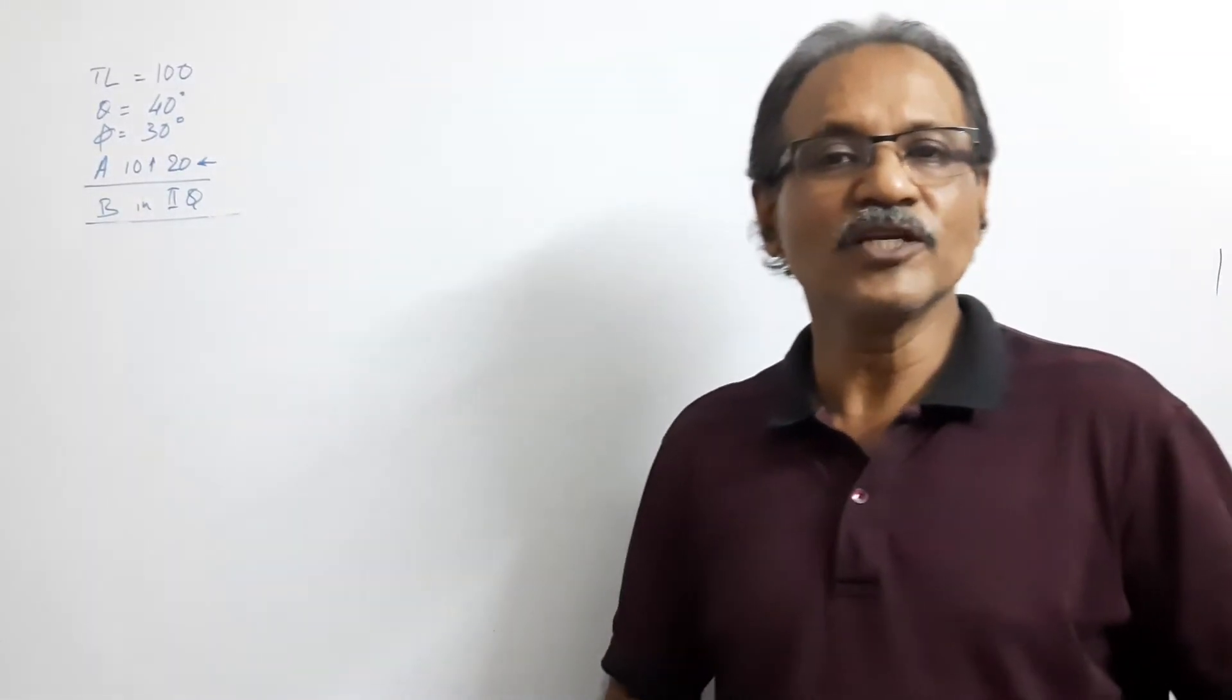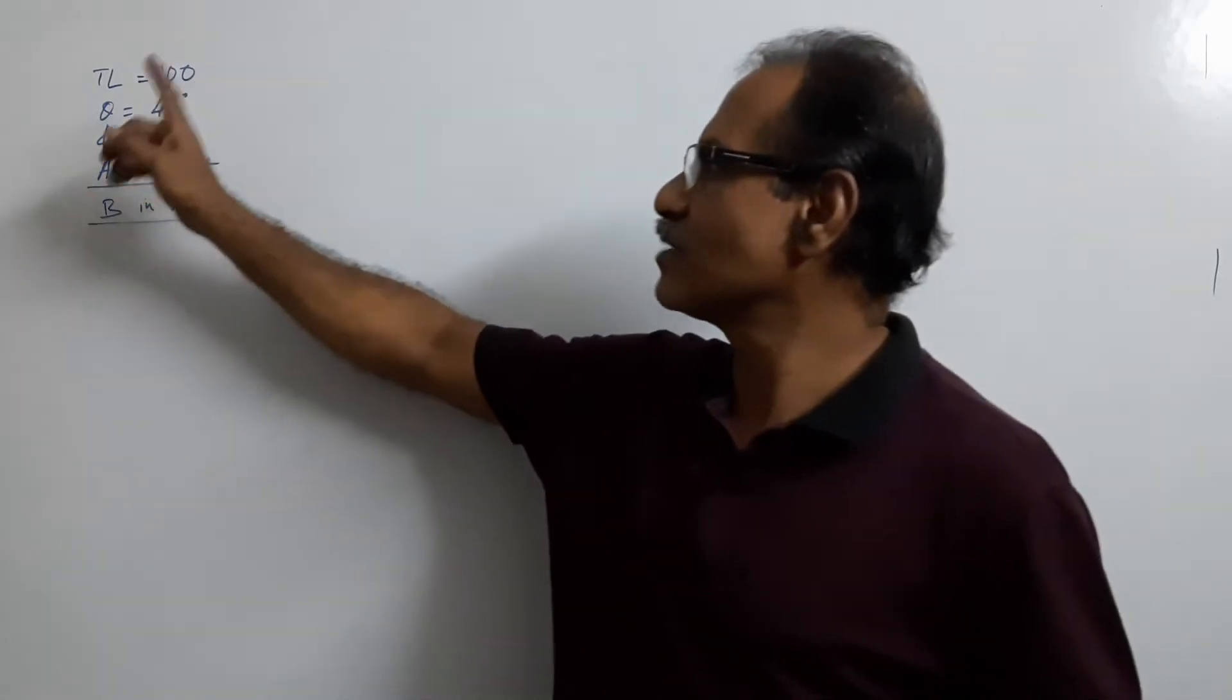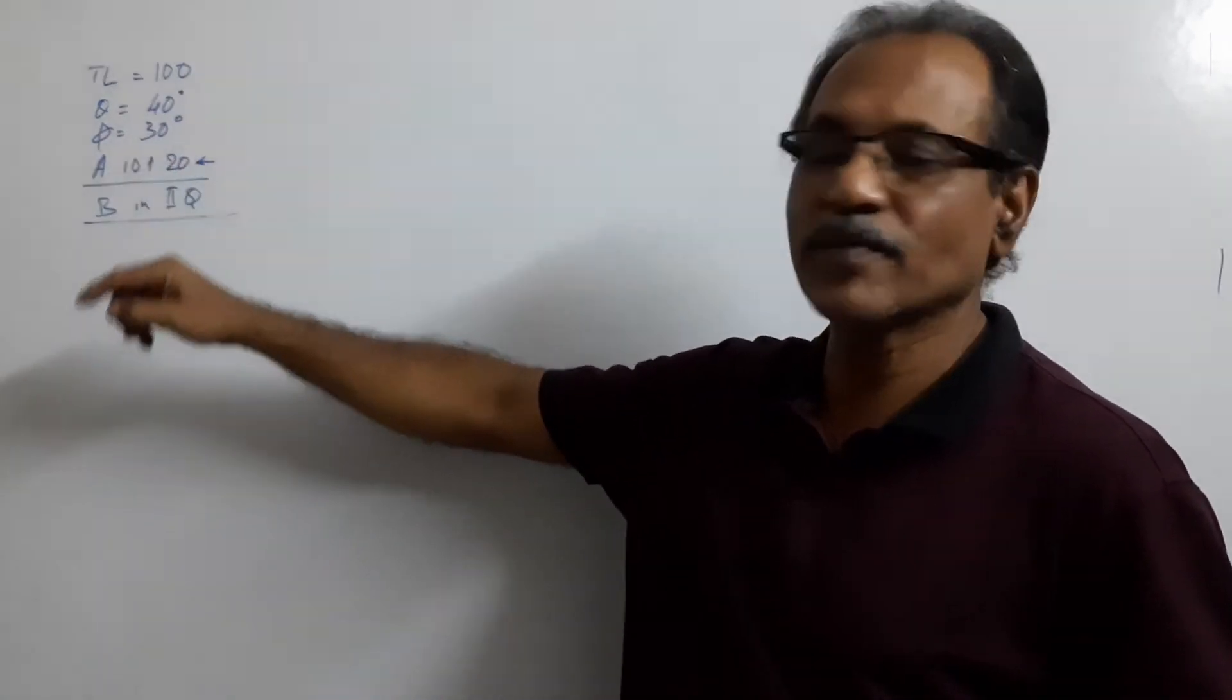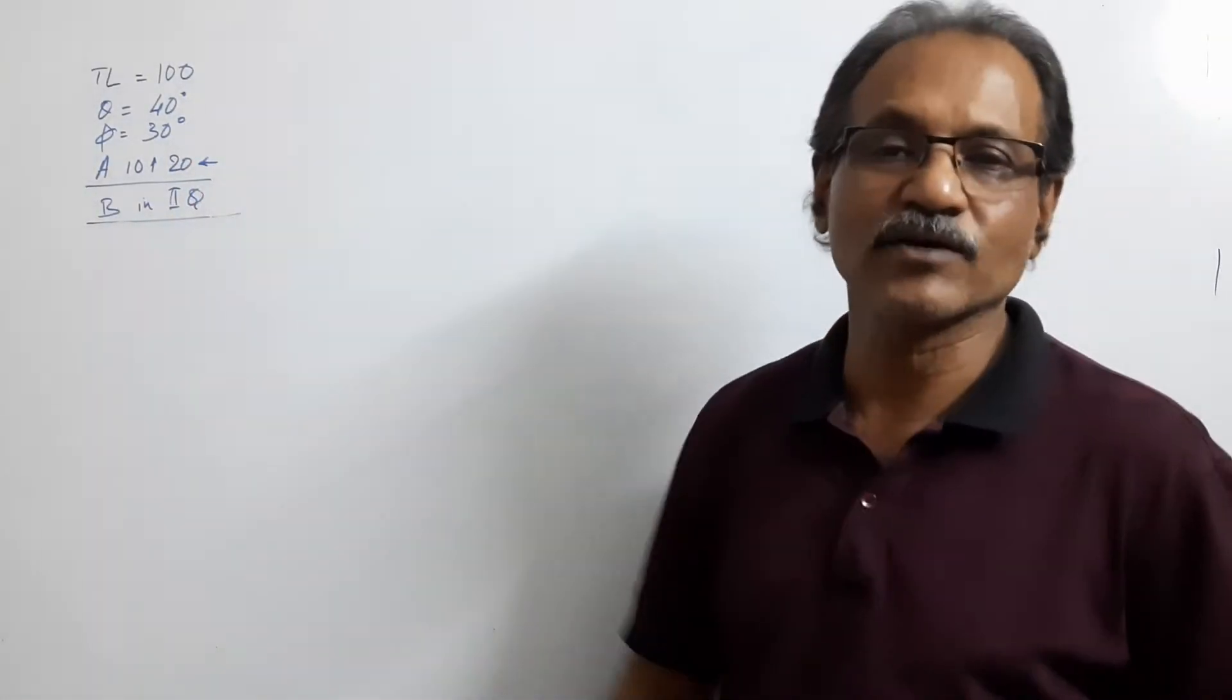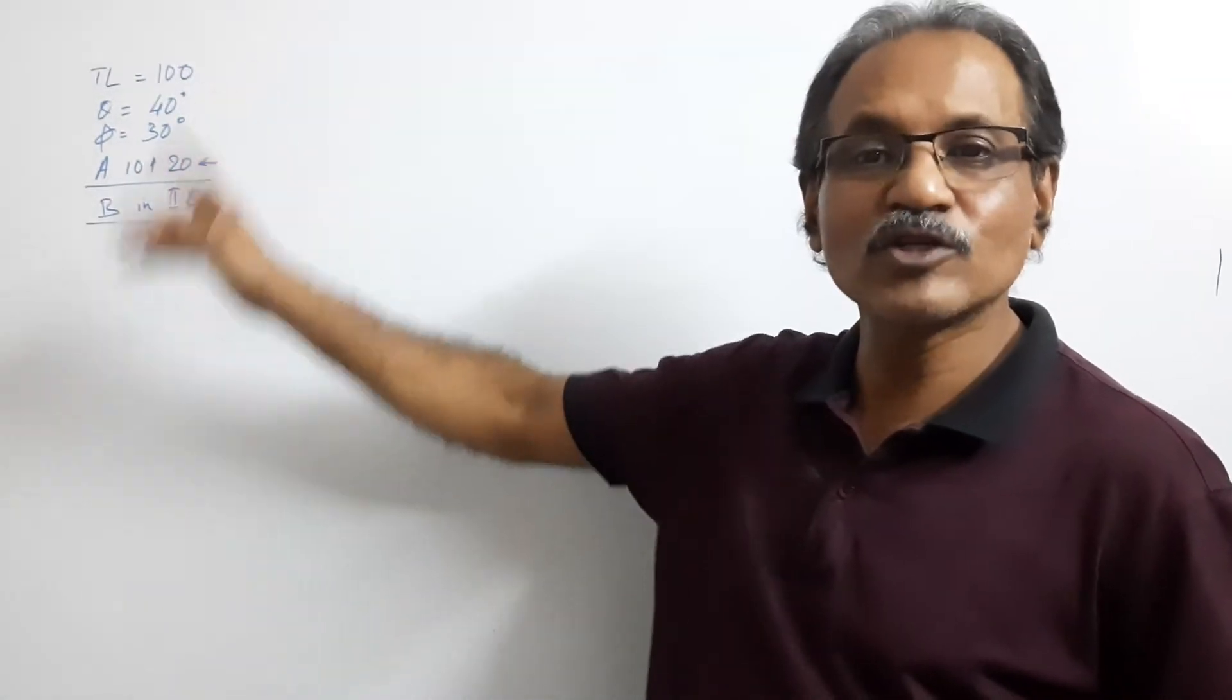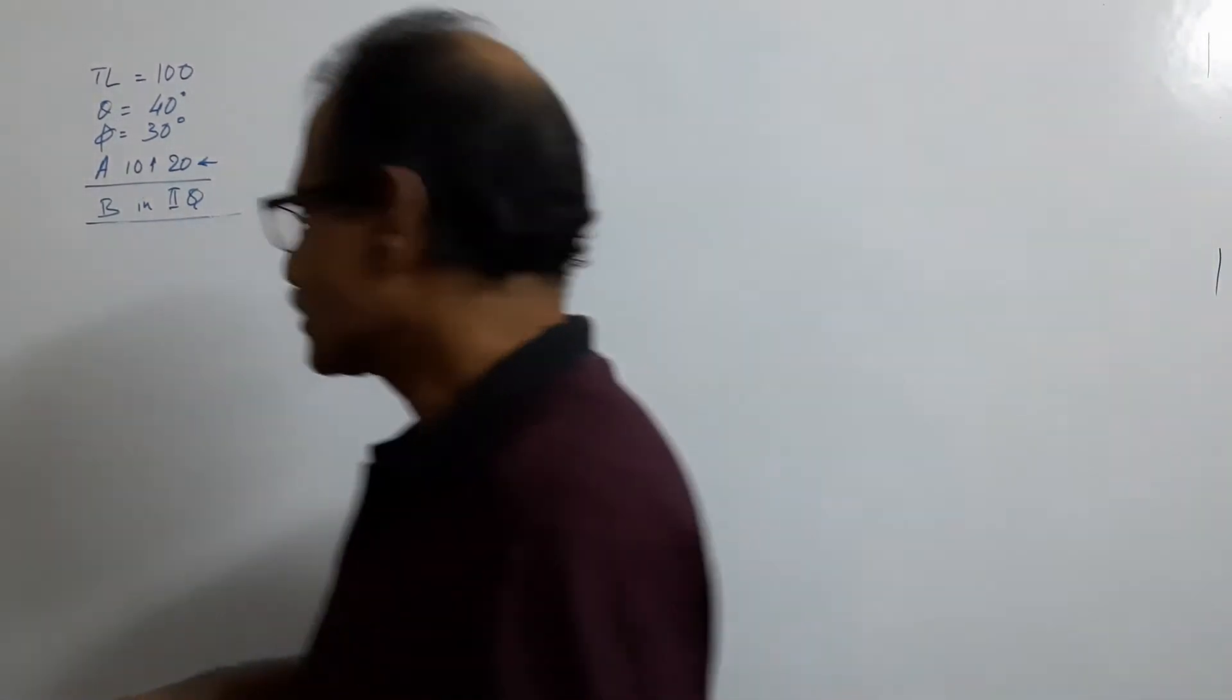Students, in this video we will do another question. Full length 100mm, theta 40mm, 5 30mm, A 10mm ago HP and the 20mm behind VP, and end B in second quarter. The full line in second quarter. A is already in second quarter, B also is in second quarter, full line in second quarter.